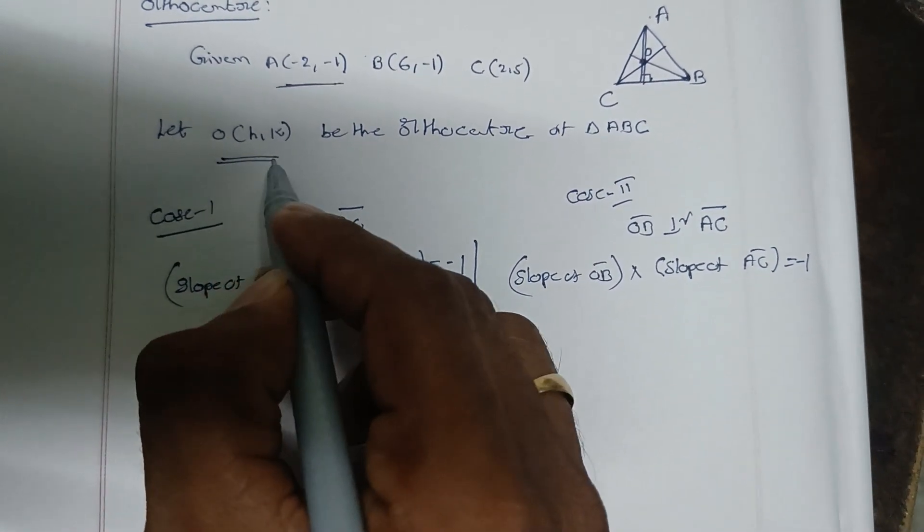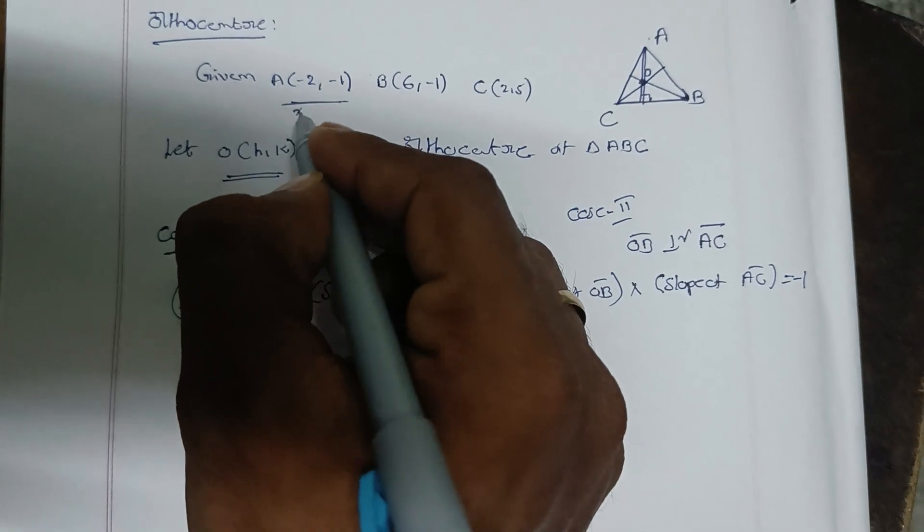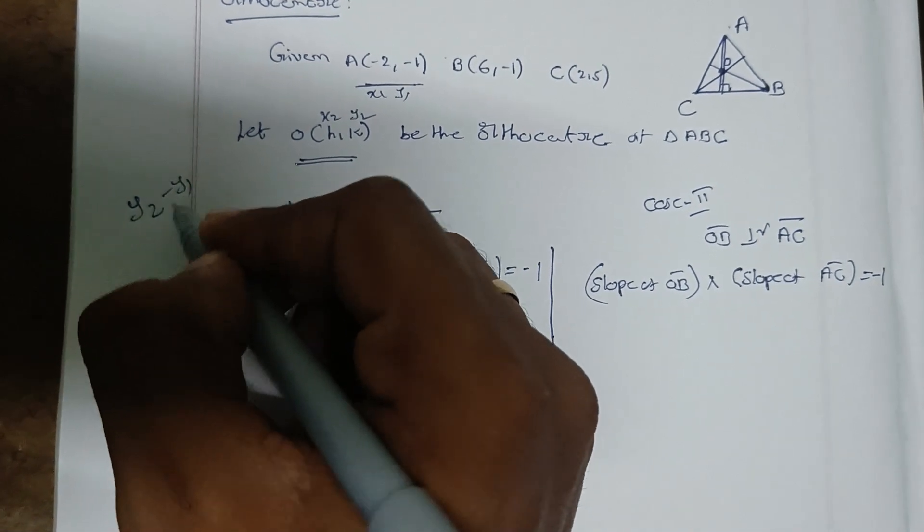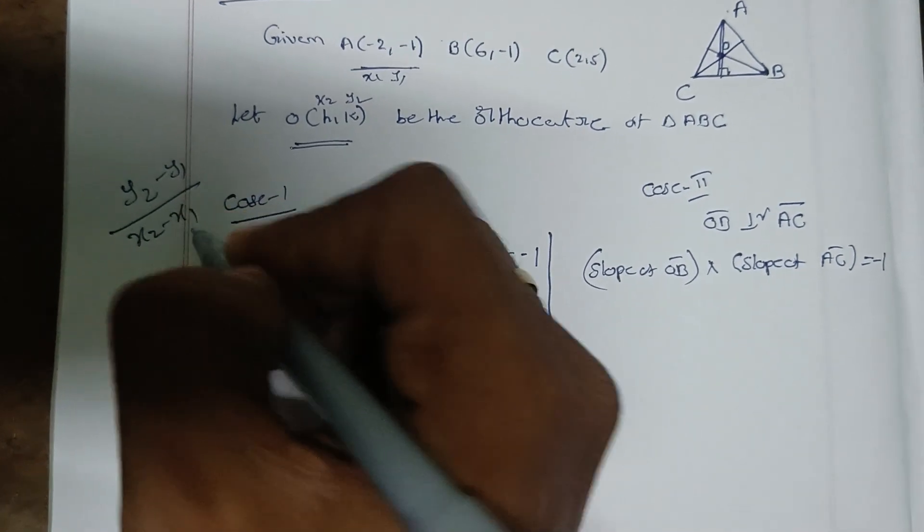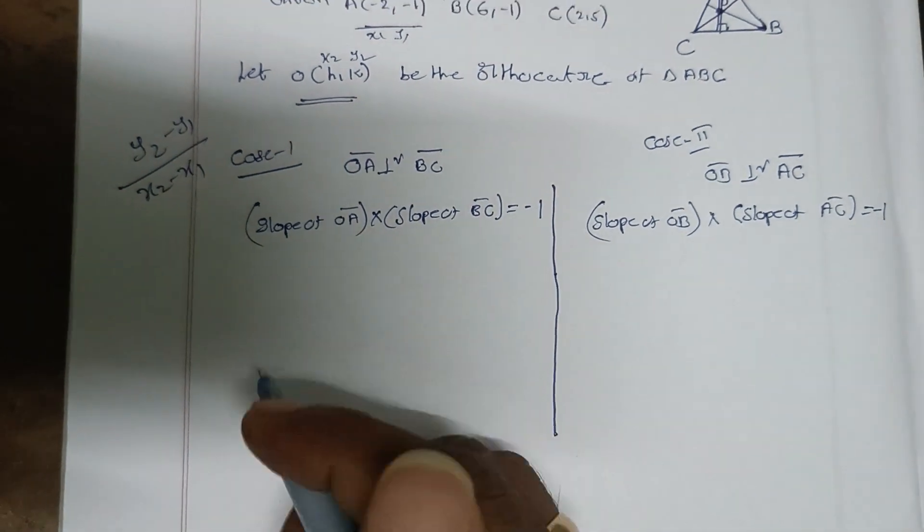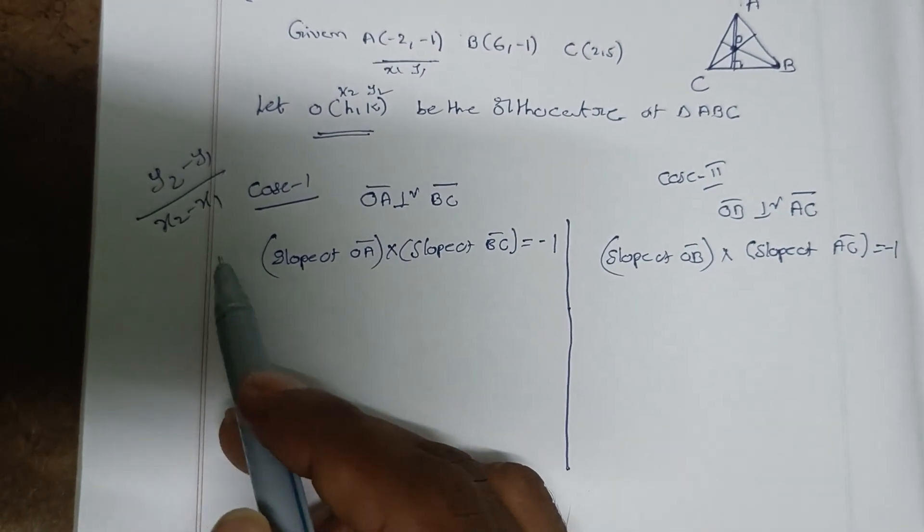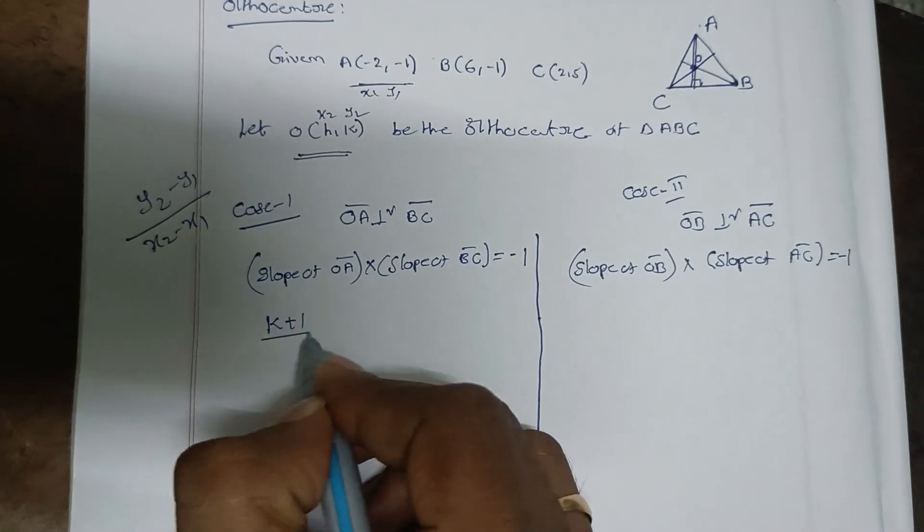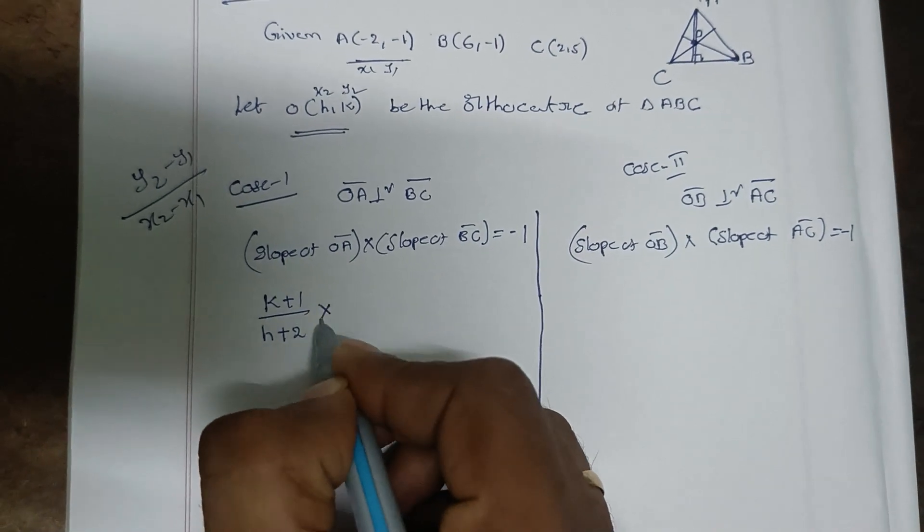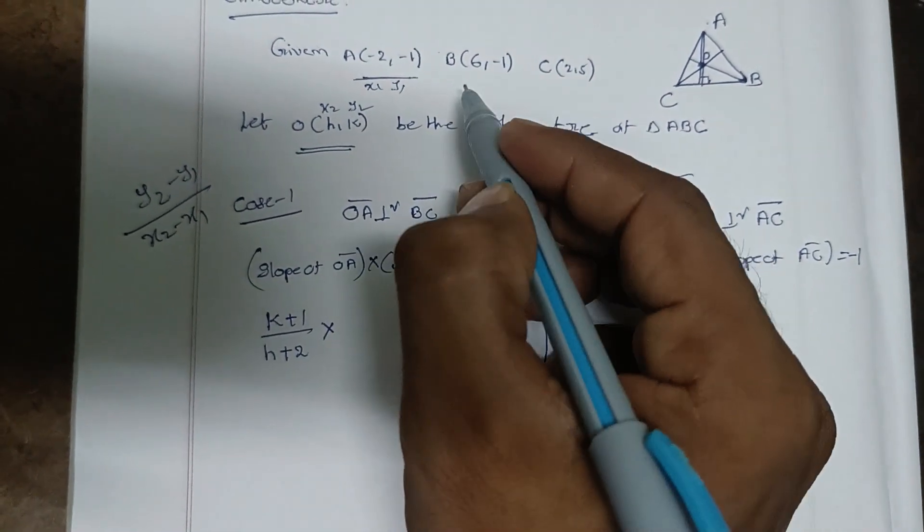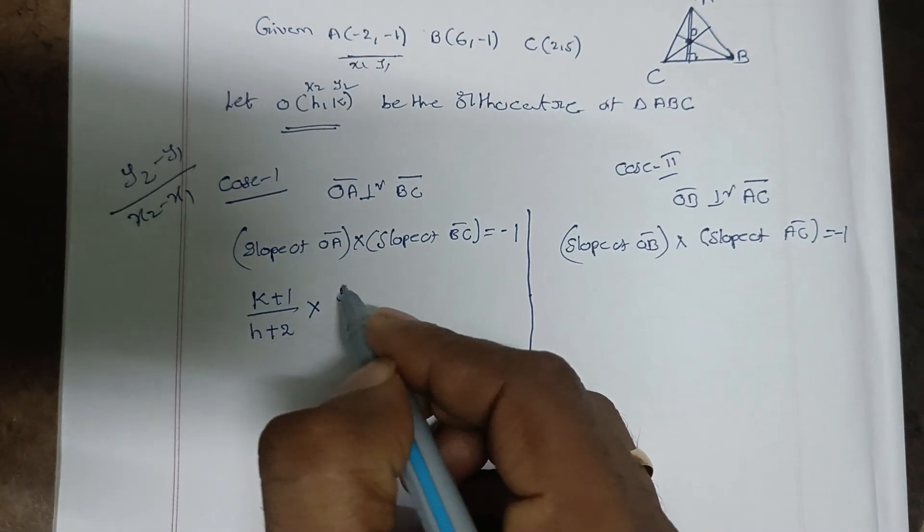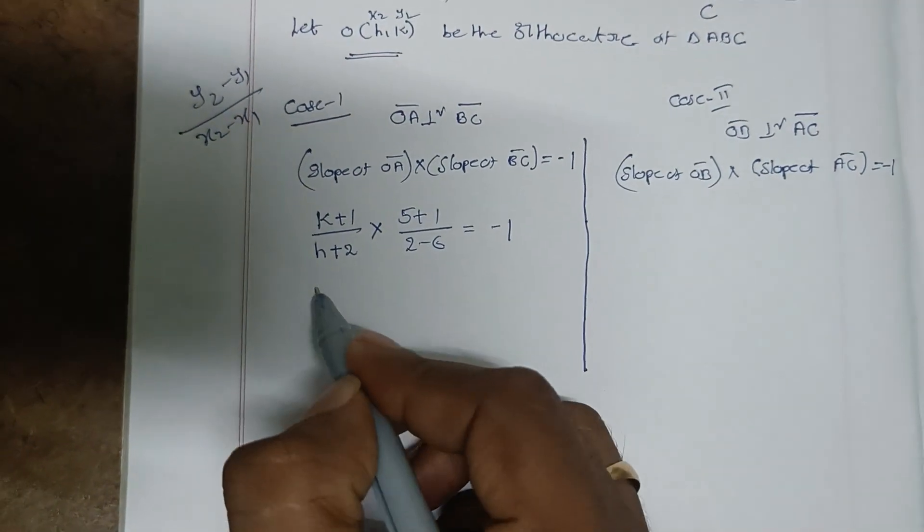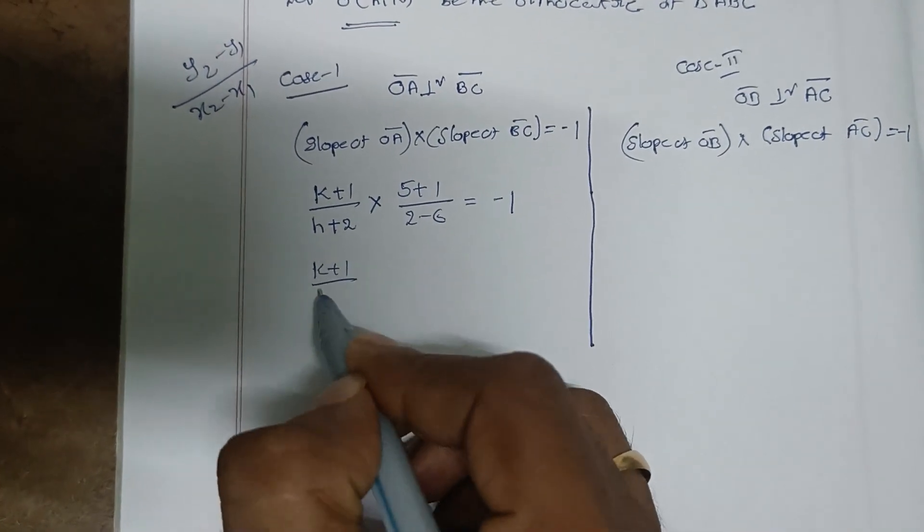Using the slope formula for two points: (y2 - y1)/(x2 - x1). For OA: (k - (-1))/(h - 2) = (k + 1)/(h + 2). For BC: (-1 - 6)/(6 - 2) = -7/4.